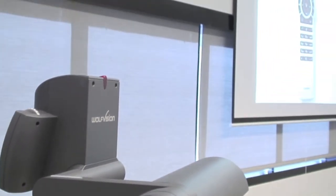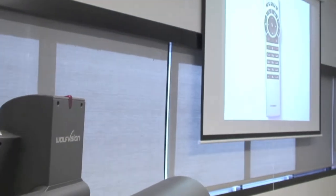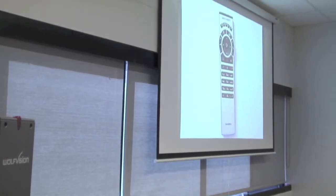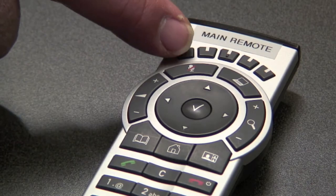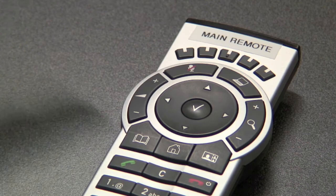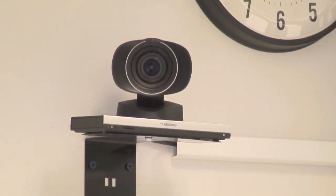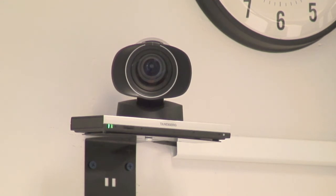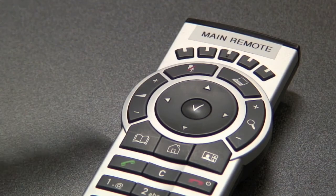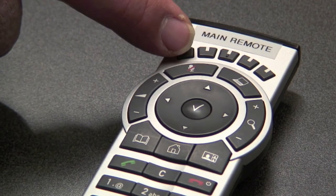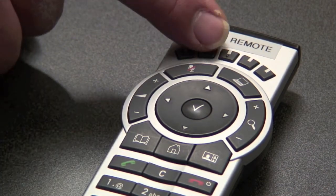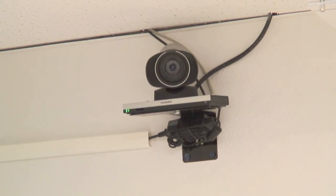The two video cameras can be independently panned and zoomed using the Tandberg remote. The Tandberg remote senses when it's been picked up and will display five hotkeys at the bottom of the TV. These correspond to the five unlabeled keys at the top of the remote. Press one of the first two buttons to switch to the default presets for that particular camera. Once selected, the camera can be panned and zoomed for your particular need.